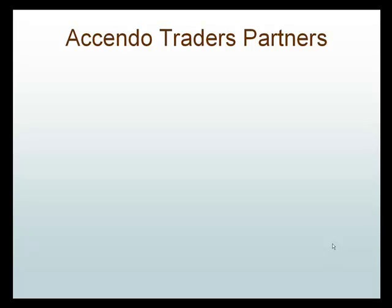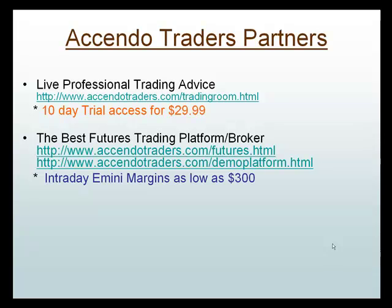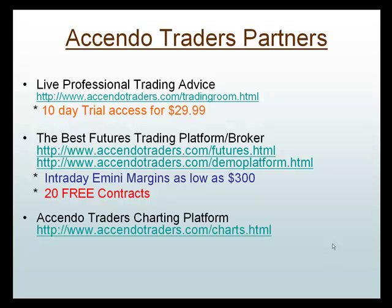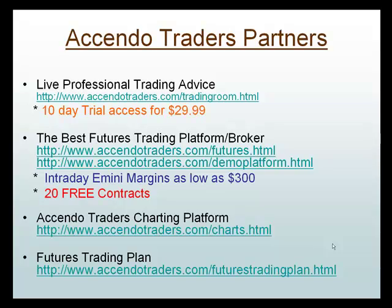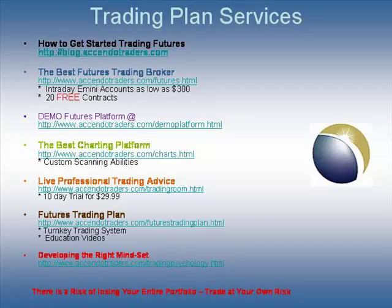That's part one of our video. We're going to show examples of our deviations in part two. As you guys know, we have a great futures trading room — you get a 10-day trial for $30. If you're going to be trading futures, we've got a great broker with intraday minis as low as $300. If you sign up through us, you get 20 free contracts. We also have a great charting platform for drawing trend lines and using standard deviation bands, and a futures trading plan to jumpstart your trading. I look forward to seeing you in part two.